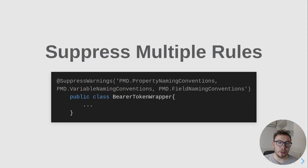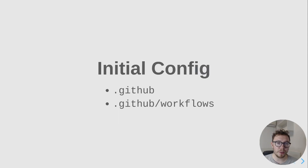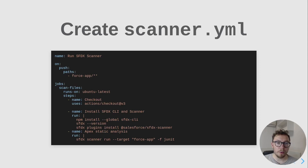In general, it is better to use warning suppression to ignore specific rules or refine your rule list, as opposed to passing in your own PMD config. Now let's talk about how we can use SFDX Scanner with GitHub Actions. We want to automate the code scanning and see the results in GitHub Actions. To do that, we need to create nested folders inside our GitHub repo: a dot GitHub folder, and inside that a workflows folder. This is just the standard GitHub notation for GitHub Actions. In the workflows folder, we create the scanner YAML file, which will contain the code that runs the scan.